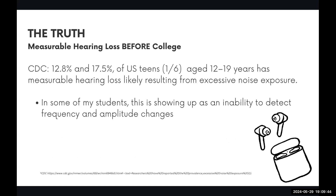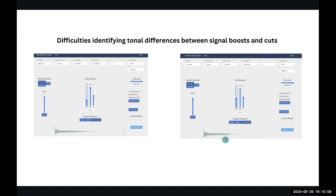There's also the hearing loss issue, and it's not a grown adult thing — it's actually happening way before college. Approximately one out of six teenagers has experienced measurable hearing loss, likely resulting from excessive noise and excessive use of headphones. Specifically in my students, what I'm seeing is an inability to recognize tonal changes. We do a lot of ear training and technical listening in my classes, and for example, I have students who have difficulty recognizing a tonal shift between 120 hertz and 500 hertz.